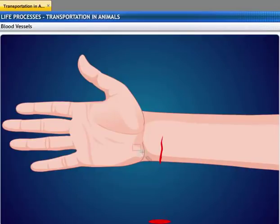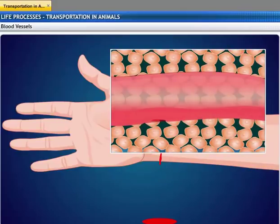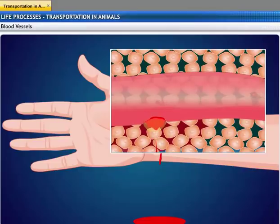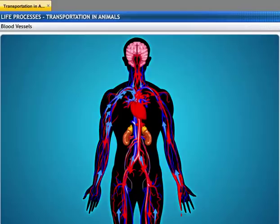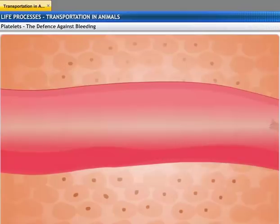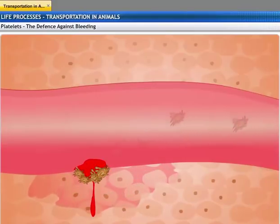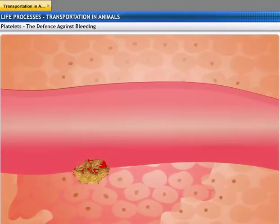If a blood vessel ruptures or gets cut, blood leaks out and results in bleeding. Alternately, the blood may flow out through a break in the blood vessel and stay within the tissue spaces. Both these cases could prove to be fatal. In addition, bleeding results in low pressure in the blood vessels, which affects the working of the heart. Platelet cells in the blood act as a defense against bleeding. When a blood vessel ruptures, platelets form a blood clot at the point of injury and help to plug the leak.